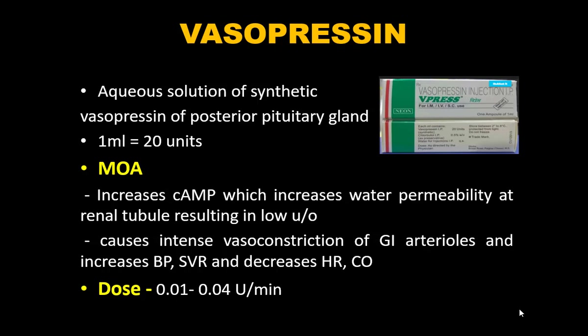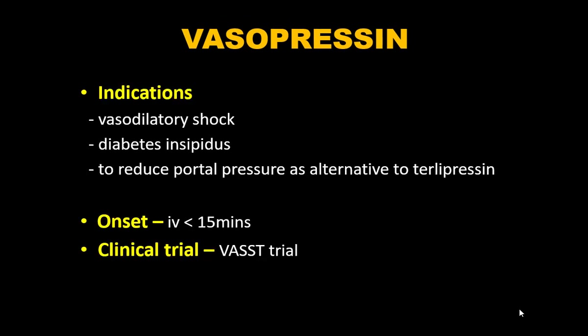Vasopressin is a synthetic analog of the posterior pituitary hormone — 1 mL contains 20 units. Mechanism: increases cAMP, which increases water permeability at renal tubules causing low urine output, and causes intense vasoconstriction of GI arterioles, increasing systemic vascular resistance and blood pressure while decreasing heart rate and cardiac output. Dose: 0.01–0.04 units/min; SSC recommends 0.03 units/min.